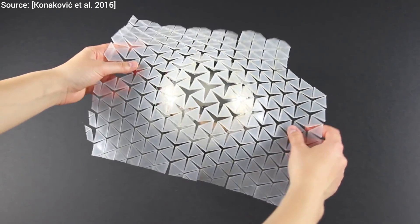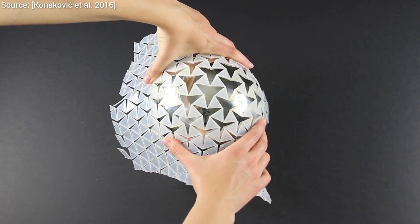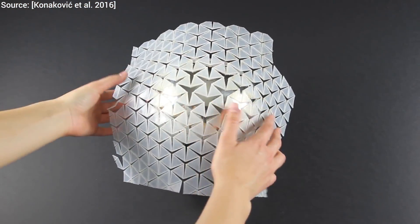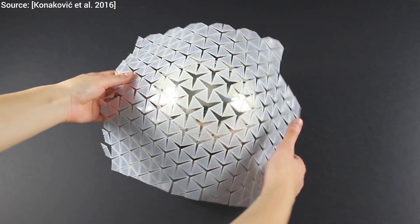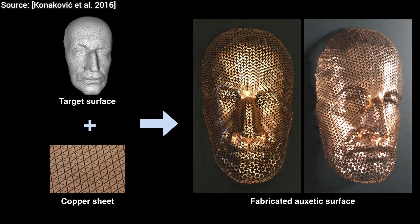Furthermore, even the simplest objects like this sphere cannot always be approximated by inextensible materials. However, if we remove parts of this surface in a smart way, this inextensible material becomes auxetic, and can approximate not only these rudimentary objects, but much more complicated shapes as well. However, achieving this is not trivial.